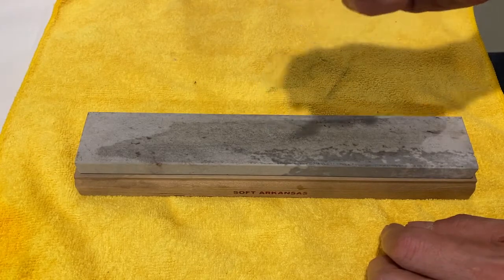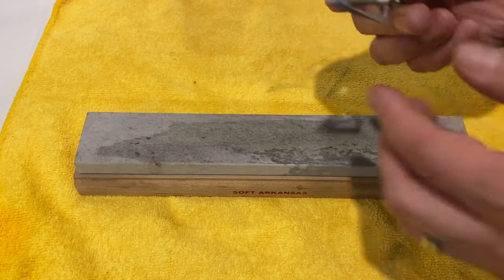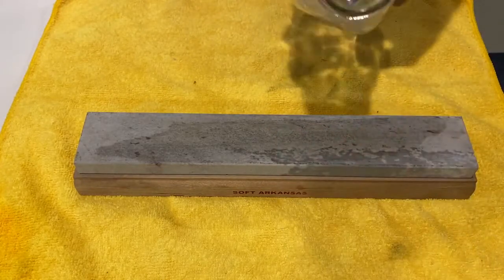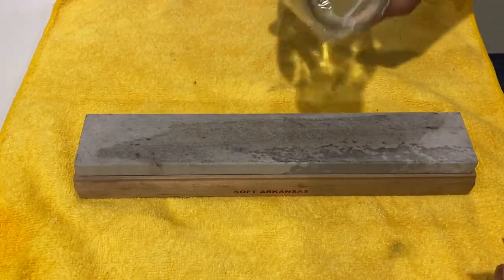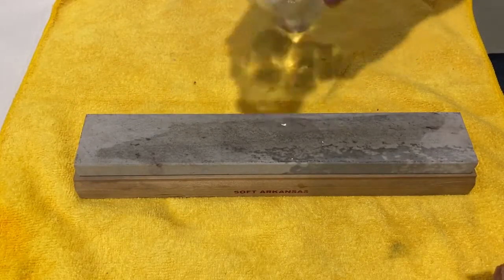Let me show you how. First of all, this is a basic Arkansas soft stone. You can see right here. Put a little bit of water - some people like oil or detergent, but I just like water. See this edge? You still have the original marking on it.